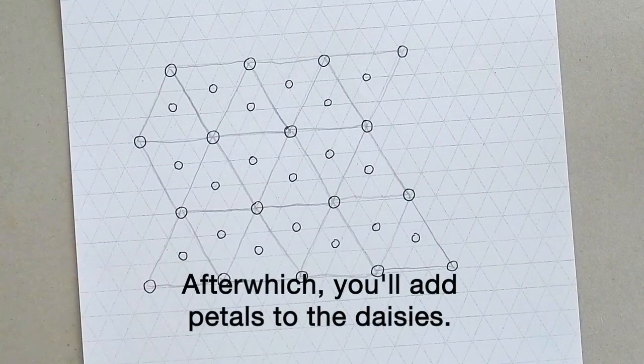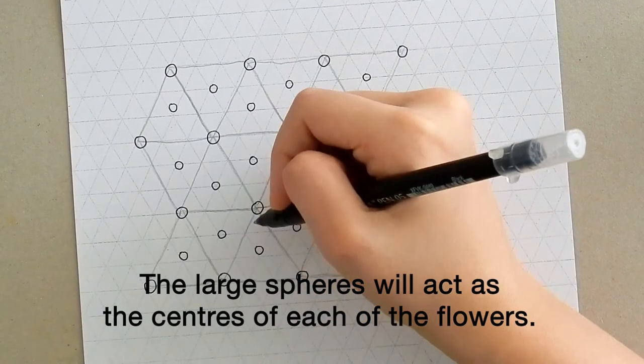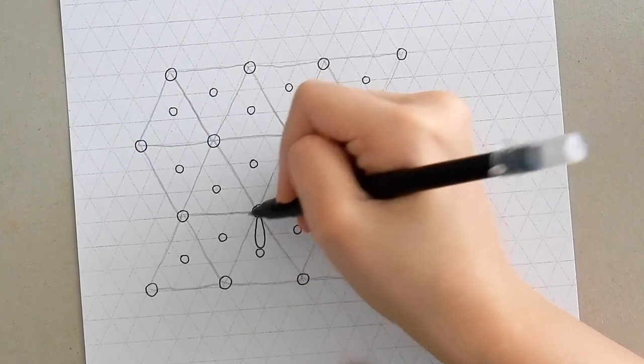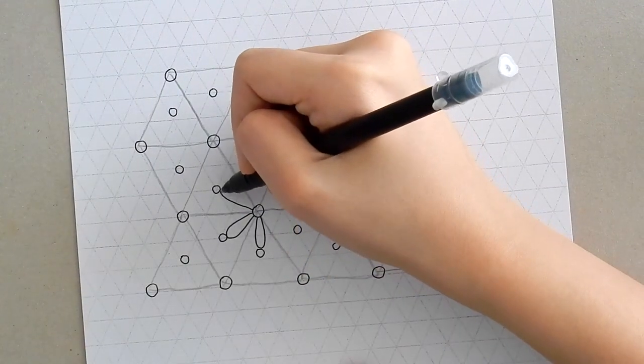Finally, we're going to add petals to make the daisies, and what you're going to want to do is to use the larger circles as the centre of each of the flowers, and you're going to make the petals connect to the smaller spheres that you've already drawn.